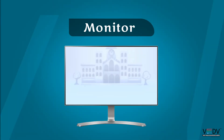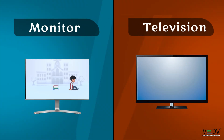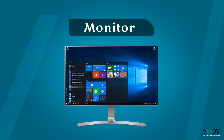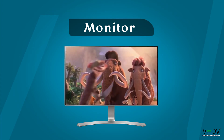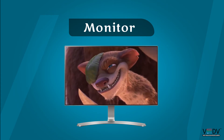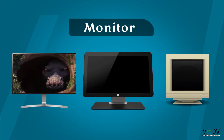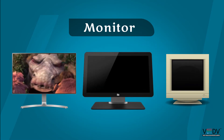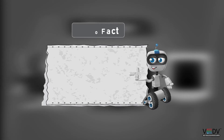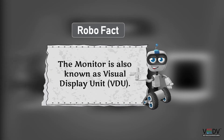Monitor: A monitor looks like a television. It shows what the computer is doing. We can watch movies and cartoons on the monitor. It is available in different shapes and sizes. The monitor is also known as a Visual Display Unit.